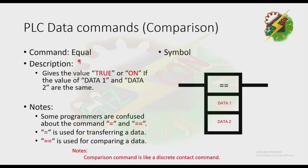Now we have the Comparison commands. First is Equal — it gives the value true or ON if the value of Data 1 and Data 2 are the same. Take note: some programmers are confused about equal (=) and double equal (==). Equal is used for transferring data, while double equal is used for comparing data. Note that a comparison command works like a discrete command. This is the symbol for this command.